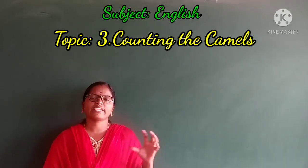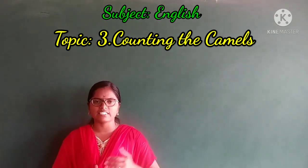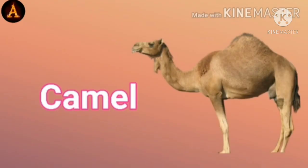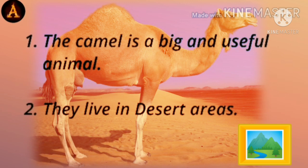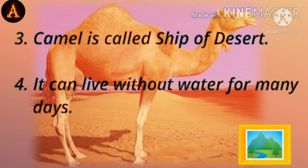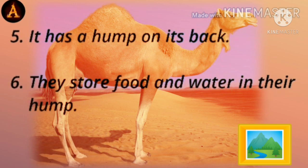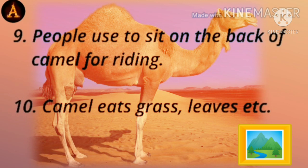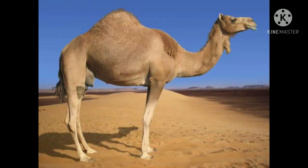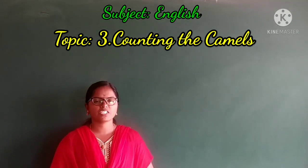This story is related to the camel and the man. Now I am going to tell you about the camel. The camel is a big and useful animal. They live in desert areas. The camel is called the ship of the desert. It can live without water for many days. It has a hump on its back and stores food and water in the hump. It is able to walk long distances in the desert. The camel has a long neck and long legs. People sit on the back of a camel for riding. Camel eats grass, leaves, etc.